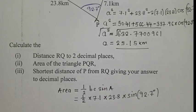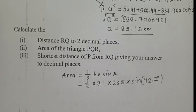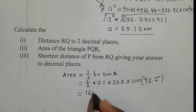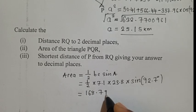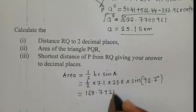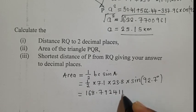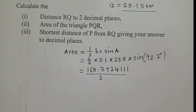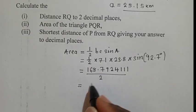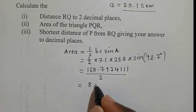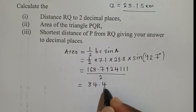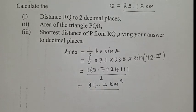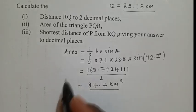And then we say times sin 92.7 degrees. So now you punch on your calculator. When you nicely punch on your calculator everything, your answer will be 168.7924111. And then you say divide by 2. When you divide by 2, our answer here will be 84.4 kilometers squared. So this is our question 2.